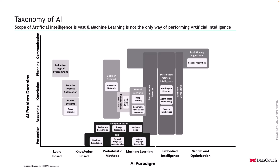Then we have autonomous systems, which are basically robotic systems, intelligent systems, and self-driving cars. These are already planning, communicating, and performing perception, spanning across multiple AI problem domains.